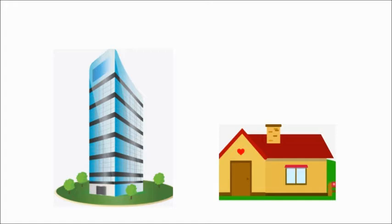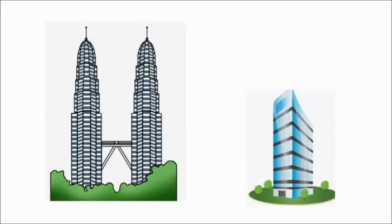We had seen in the previous video the building is tall and the house is short. But what do we see here? The building is looking short and there is a twin tower which is very very tall. It has many floors and the blue color building has less floors. So the twin tower is tall and the blue color building is short.